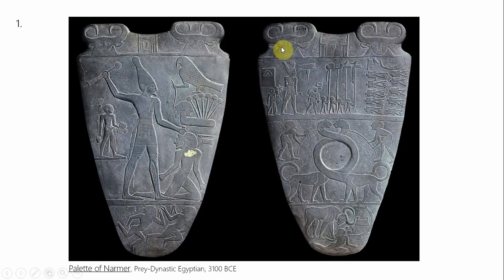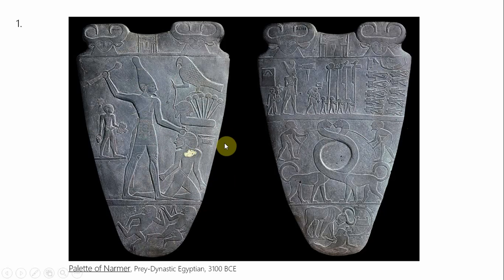You might also happen to know that the bull heads are of the goddess Hathor. Another thing we just recently covered was the use of hierarchical scale in this, which is a really good example of where scale change describes change of importance. Things are small when they're of less importance, and large when they are of extreme importance, like Narmer himself.